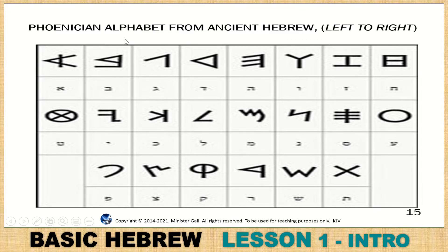Here is your Phoenician alphabet from the Hebrew, reading right to left. This is where it started generating into different shapes. They changed it from right-to-left to left-to-right. The Greeks and the Romans were always trying to change God's word — they changed it all this way.